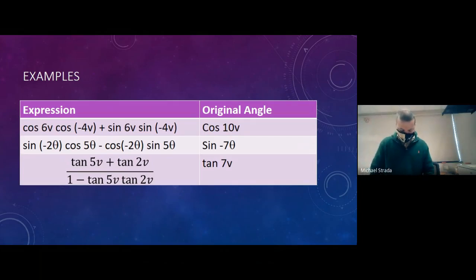The first one multiplies the cosines and the sines together, so that means it must be a cosine. It's the opposite of the sign in between them, so that's going to give us cosine of negative u. The second one is tangent, so it's got to be tangent. It's the same sign as the numerator, which is subtraction. 3v minus negative 6v turns into 3v plus 6v, which is 9v.